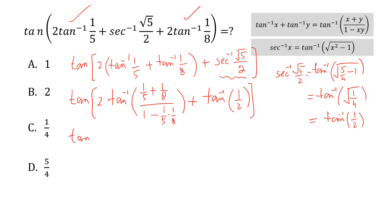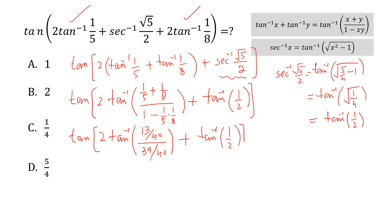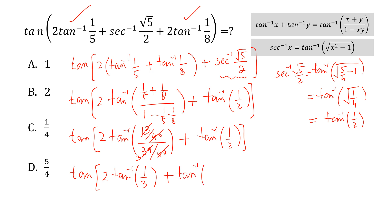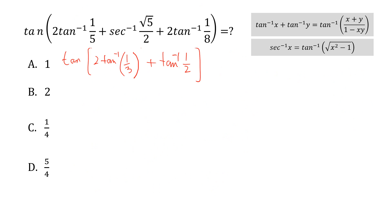Now we simplify. We can write this as 2 times tan⁻¹ of (13/40) divided by (39/40), plus tan⁻¹ of 1/2. Simplifying further, this becomes 2 times tan⁻¹(1/3) plus tan⁻¹(1/2).